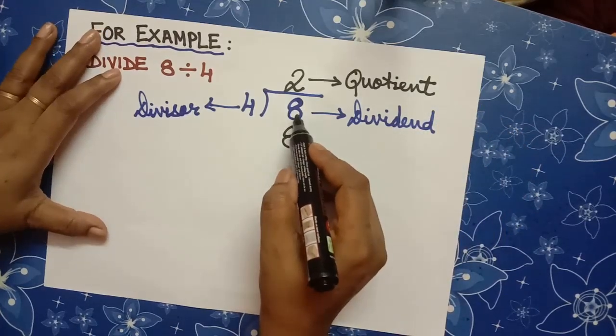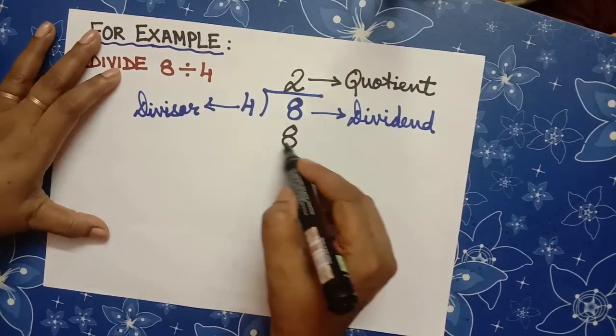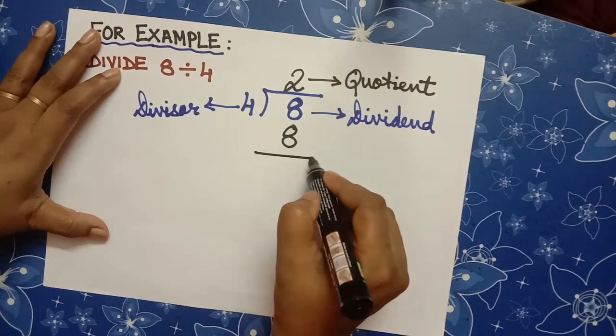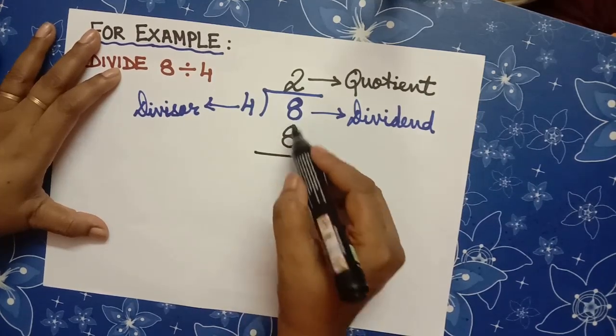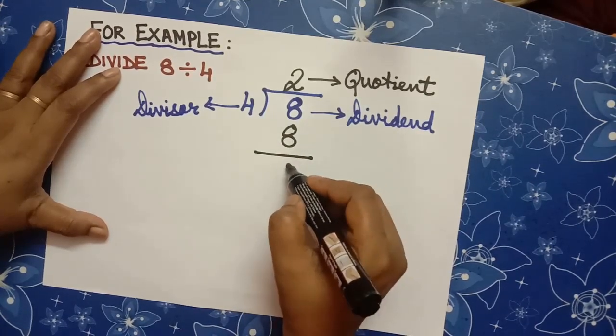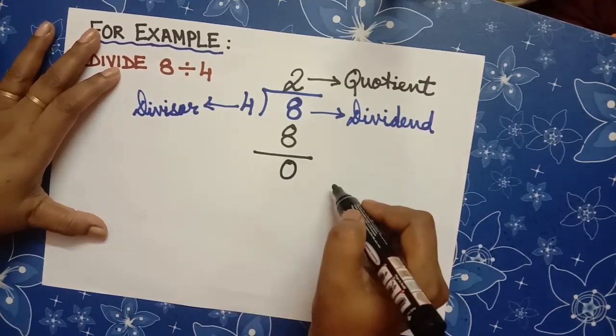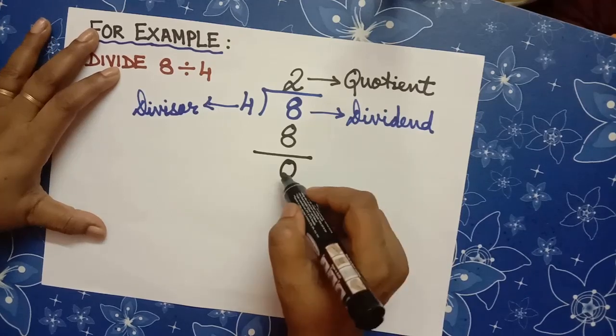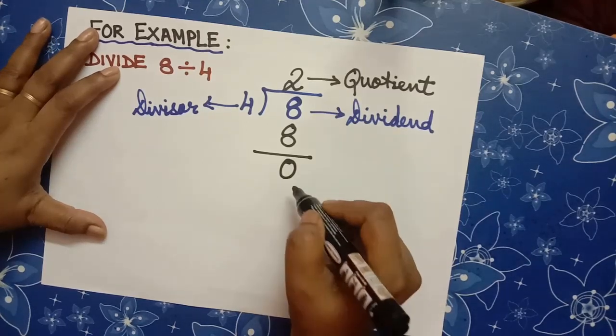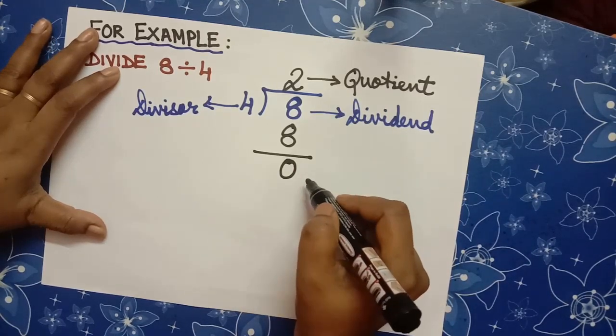And we have to subtract 8 from 8. See how much we are getting? 8 minus 8 is 0. There is no remainder. The number which is left is called the remainder. And there is no remainder.